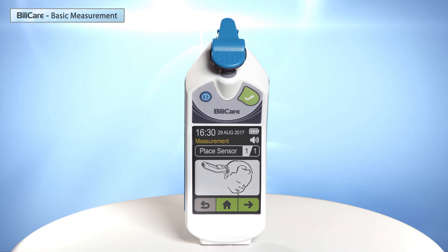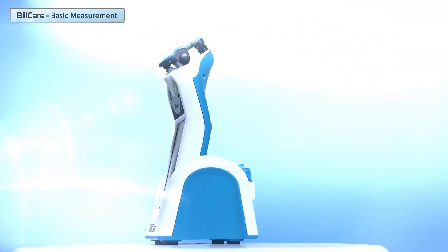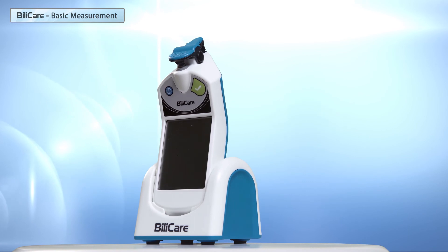There are three options to return to the home screen. Press the next button, or the home button, or use the green button on the device. BILICARE is now ready for another measurement.